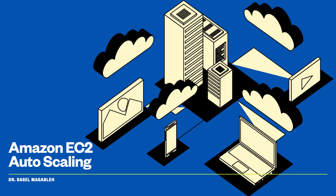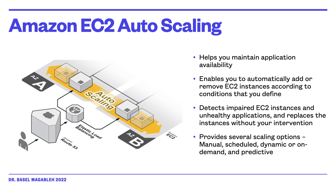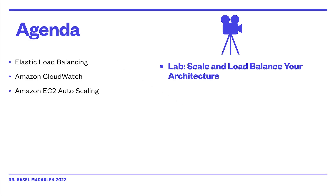Now let us look at Amazon EC2 Auto Scaling. When you run your application in AWS, you want to ensure that your architecture can scale to handle changes in demand. Scaling is the ability to increase or decrease the compute capacity of your application. Consider a workload with varying resource requirements — for example, peak capacity on Wednesday and least capacity on Sunday. Auto scaling helps you maintain application availability and enables you to automatically add or remove EC2 instances according to conditions you define. You can detect impaired instances and unhealthy applications and replace those instances without human intervention.